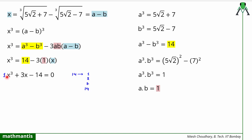If we put x = 2, we see it satisfies the equation: 2³ = 8, and 3·2 = 6, so 8 + 6 - 14 = 0. So x = 2 satisfies this cubic polynomial equation. This means (x - 2) is a factor of this cubic.